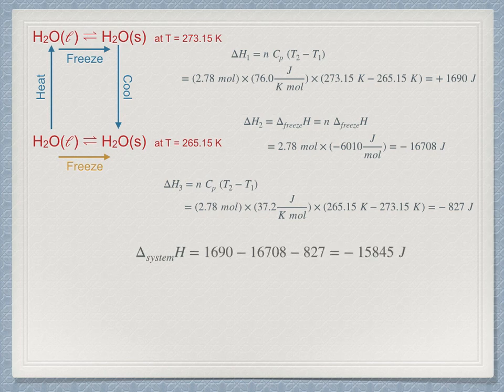Sum these together to get the total enthalpy change, which can be attributed to the enthalpy change in the irreversible process under consideration. Its value is minus 15845 joules. This is the enthalpy change from the perspective of the system.